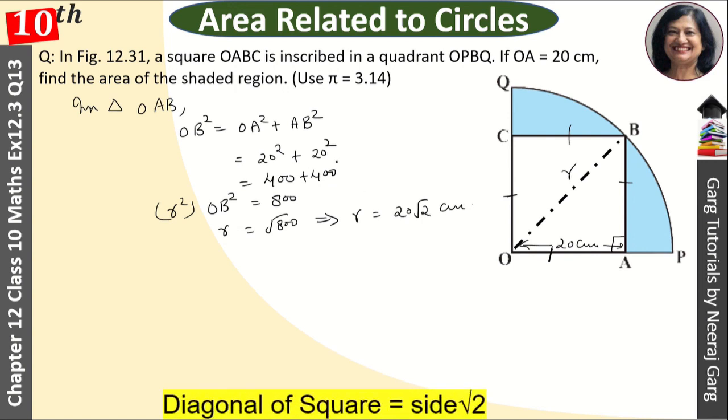Now when we have to find the diagonal, we can use the diagonal formula, that is A root 2. Remember that. You can find it directly.